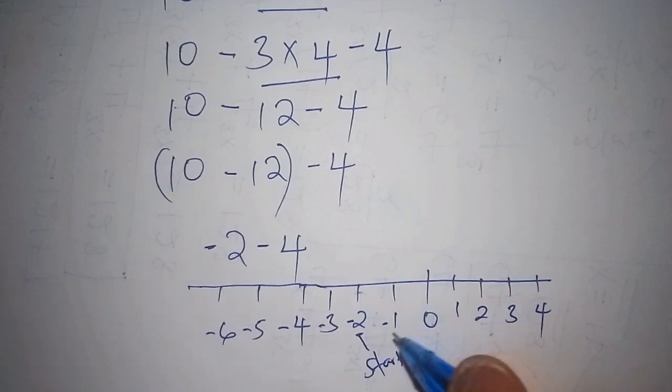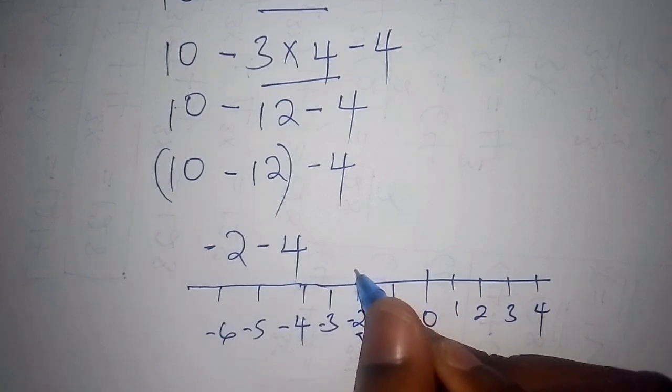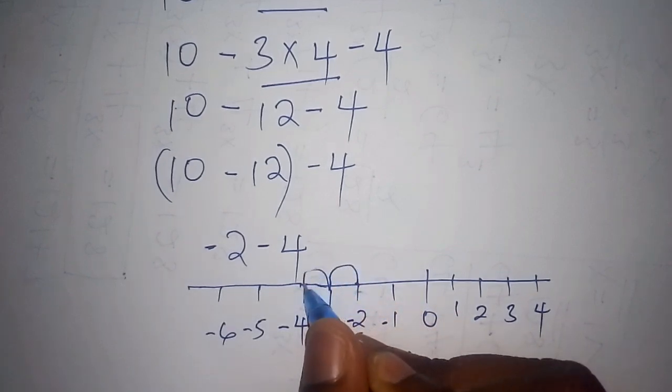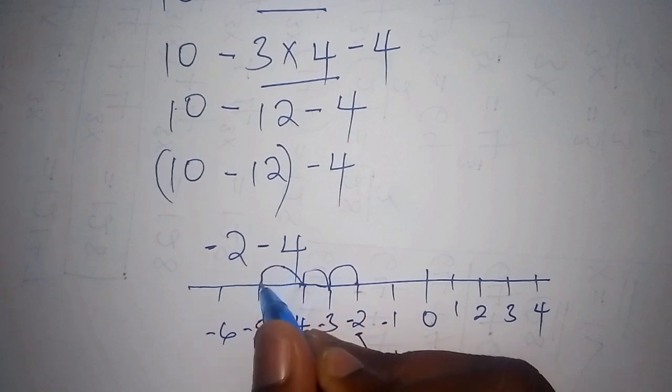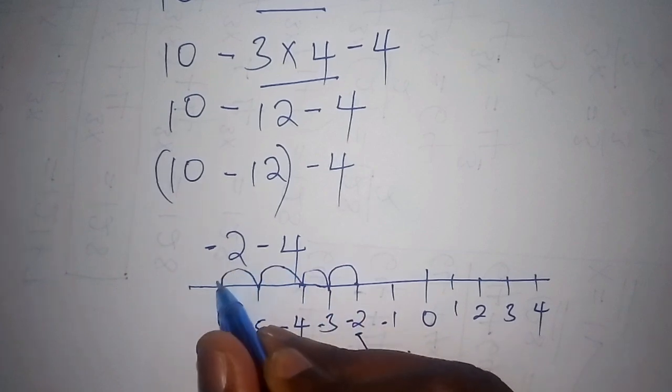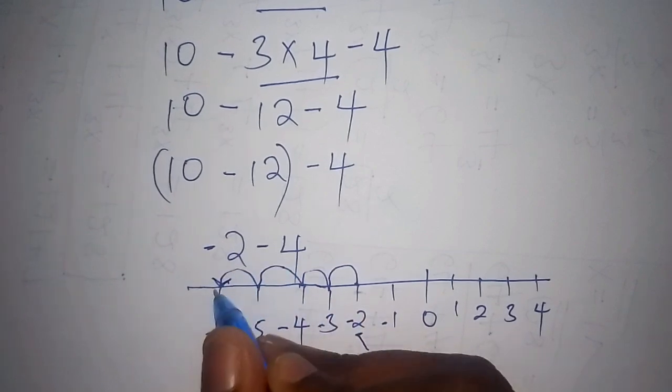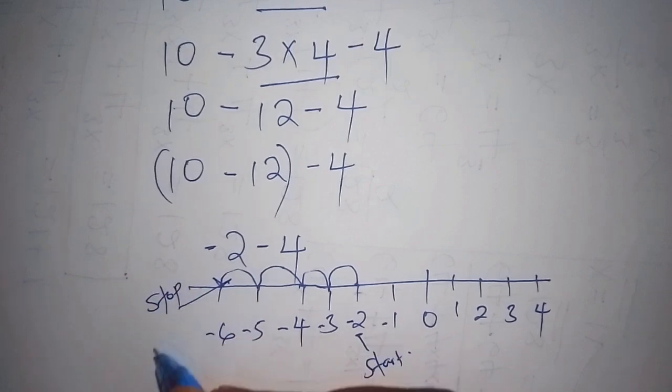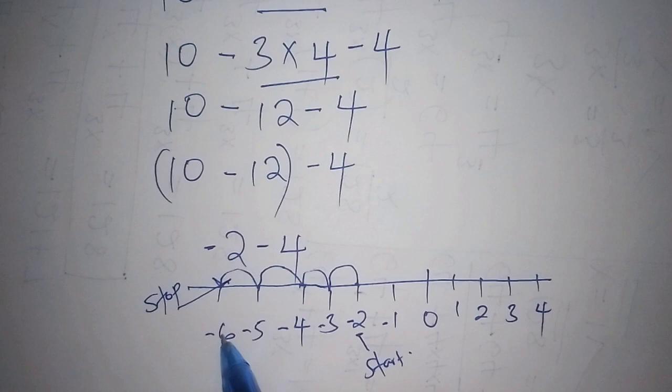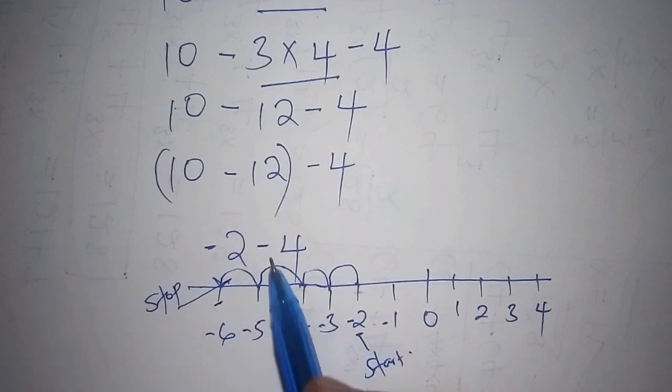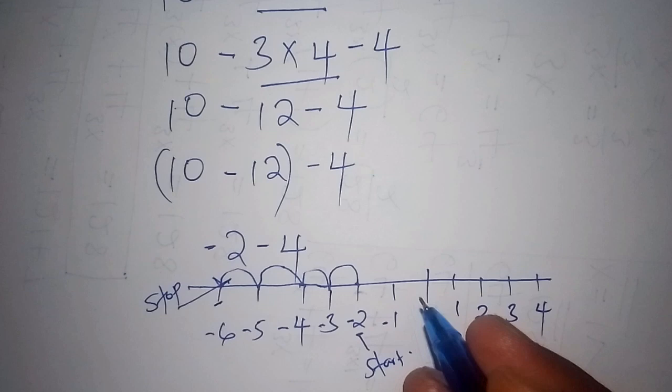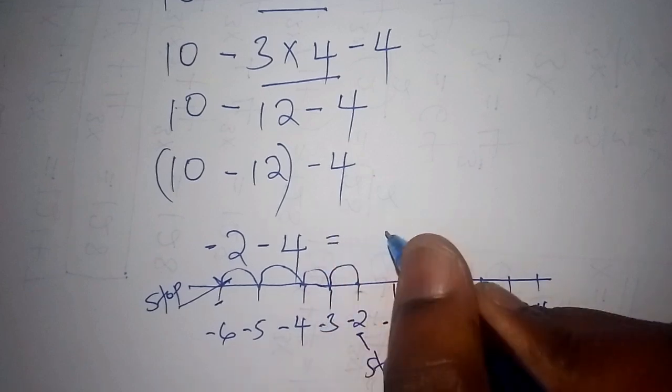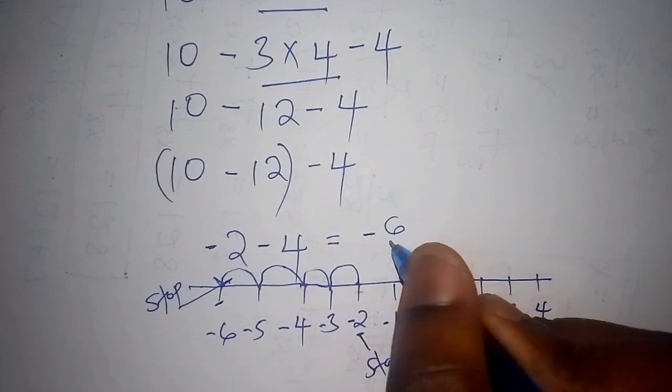So here now let us start. So here we shall have 1, 2, 3, then 4. So finally we shall stop here. And see now we have stop. So after that now we shall check where have we stopped. We have stopped at minus 6. So meaning that minus 2, minus 4, the answer is equals to minus 6.